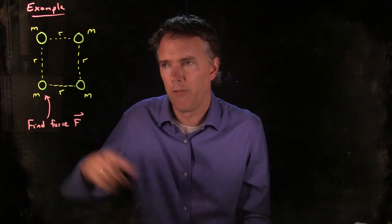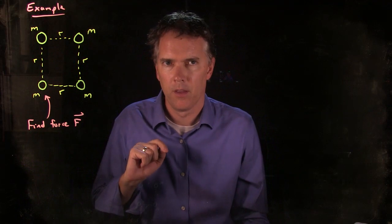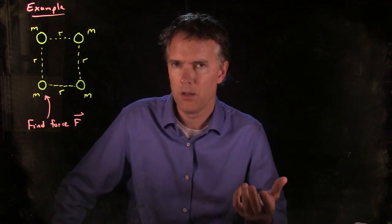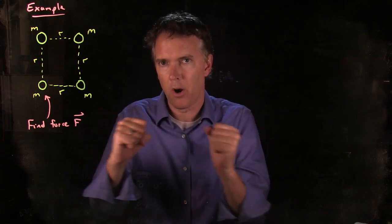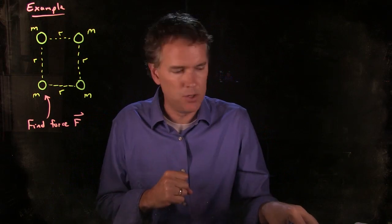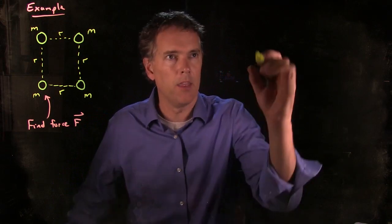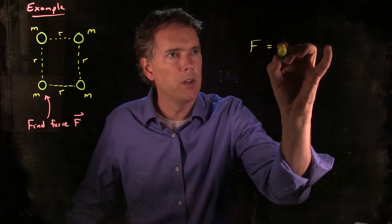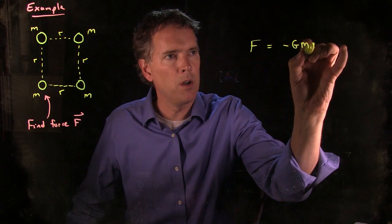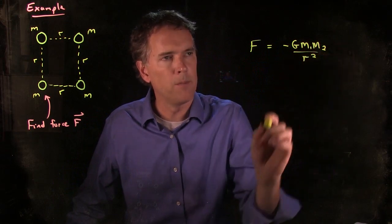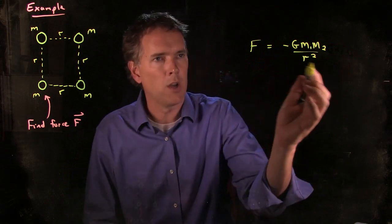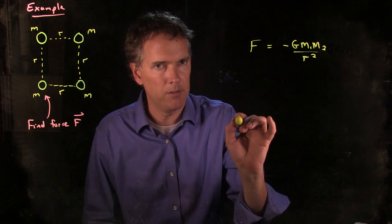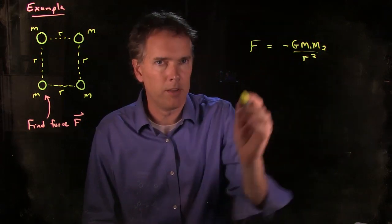The question is: what is the force on this guy right here due to the other three? This is Newton's universal law of gravitation. Newton's universal law of gravitation says any two masses in the universe are attracted together, and the relationship is given by F equals negative G m1 m2 over r squared. The negative sign means that they're attracted together. It's along the line between the two masses — mass 1, mass 2 — and r is the distance between them.